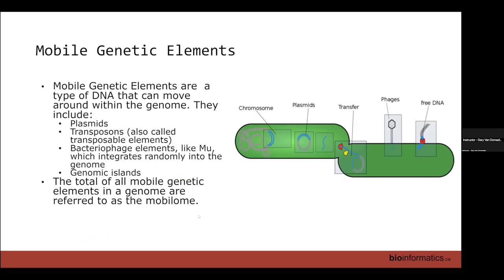Mobile genetic elements are basically any type of DNA that can move around within or between genomes. The different types — replicons — include plasmids, transposons, bacteriophage elements, and genomic islands, among others. When you compile all of the mobile genetic elements harbored within a genome, that's referred to as the mobilome. I'm not going to profile all the characteristics of these different elements here, but I provide them in the additional slides section and you'll refer to them in the practical.